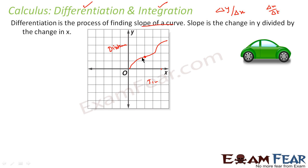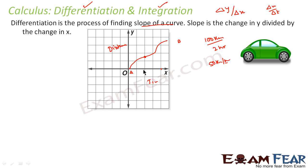Let me tell you the difference between instantaneous speed and average speed. Say you are traveling from city A to city B. The distance is 100 km and you cover it in 2 hours. Your average speed is 50 km per hour — total distance by total time. But your speed was not constant: sometimes traffic slowed you down, sometimes you were speeding on a highway.